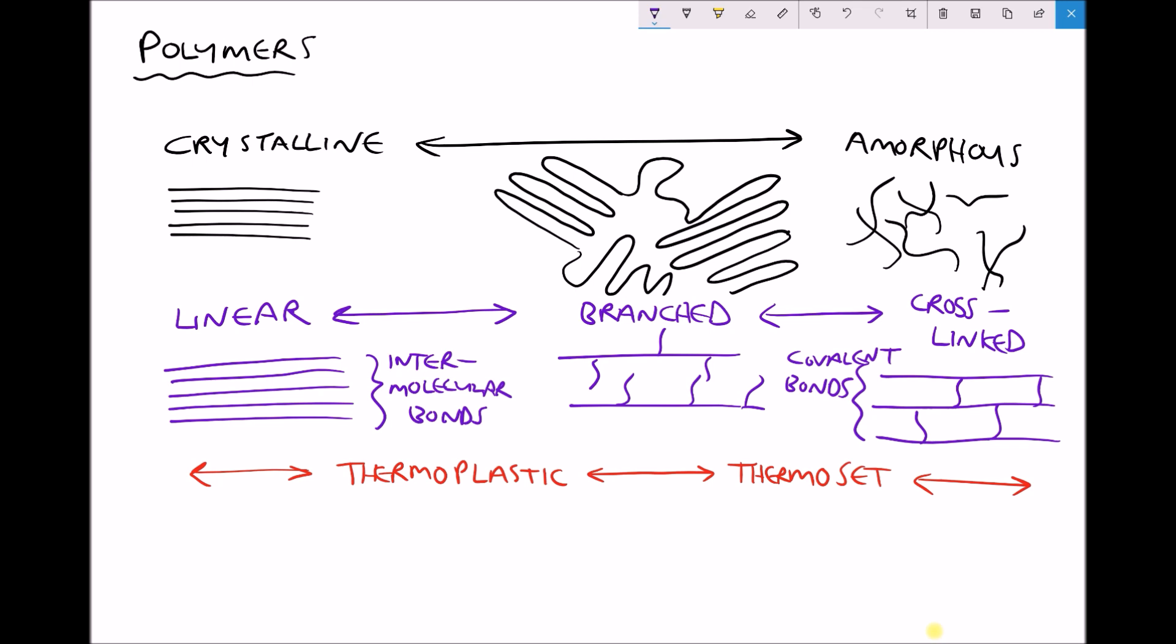Now this also relates to the final classification for polymers. All polymers can be separated into two groups. They're either considered to be thermoplastic or thermosetting plastic, also referred to as thermosets.